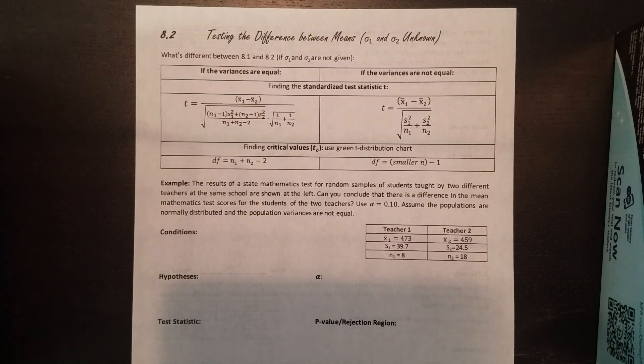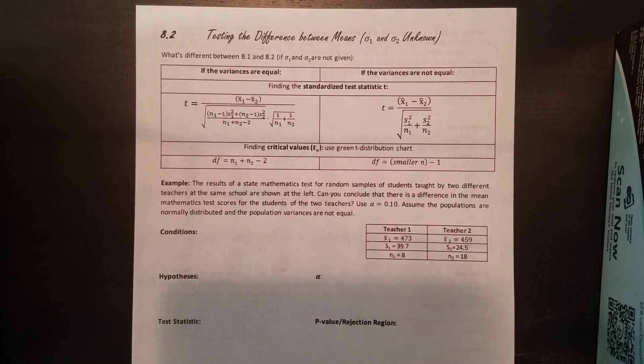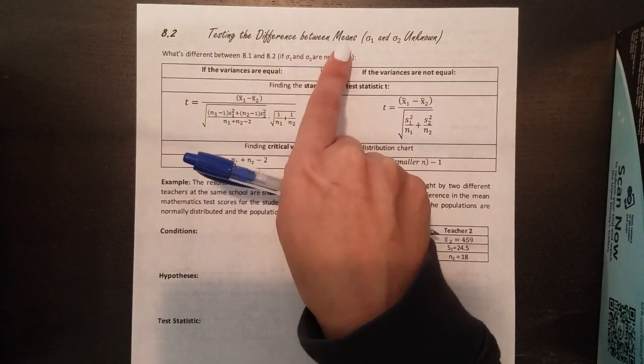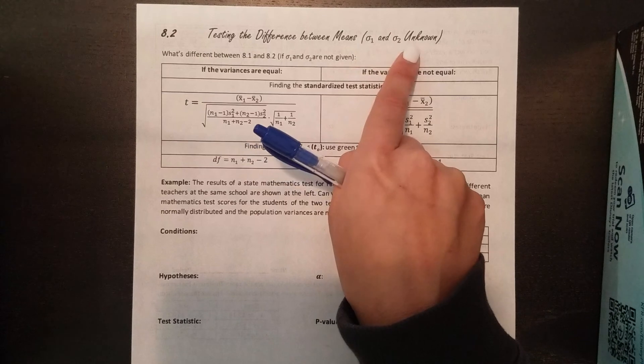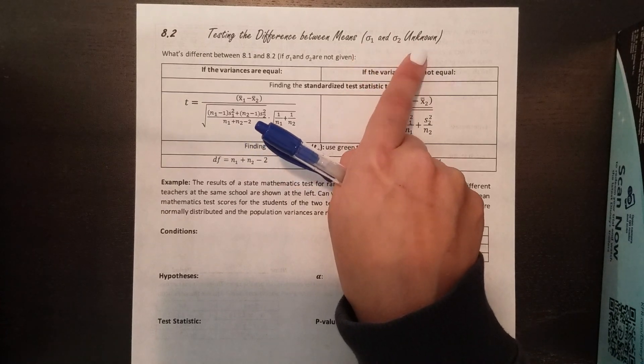Hello, welcome to section two of another episode of our hypothesis testing. So 8.2 is super similar to 8.1 in that we're still testing means. We're trying to find the difference between two samples, two different means, but this time our two population standard deviations from our two samples are unknown.